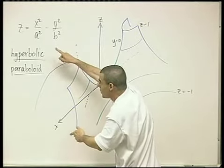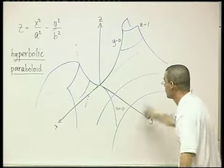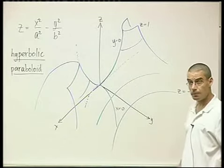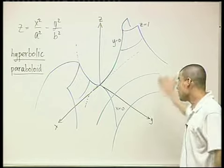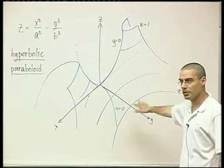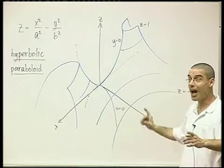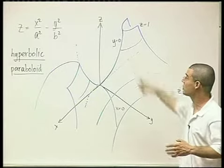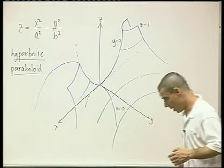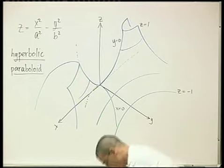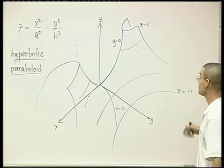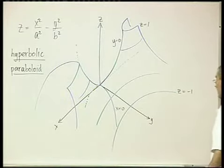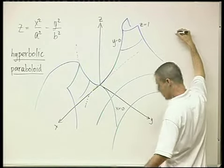When z is negative you get the other sort of hyperbolas, oriented the other direction. All in all what you should see is a saddle — a shape that's usually called a saddle. There's another way to draw the same thing which is maybe more convincing as a drawing but more difficult to explain why it reflects this equation.